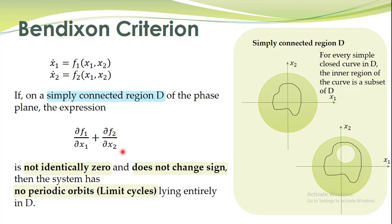The statement of the theorem is clear: if we have a simply connected region and we compute this expression, and if it is not identically zero and does not change sign, then in that particular system no limit cycle can exist. The proof of this theorem also gives some insight and is also simple, so we shall also study the proof.